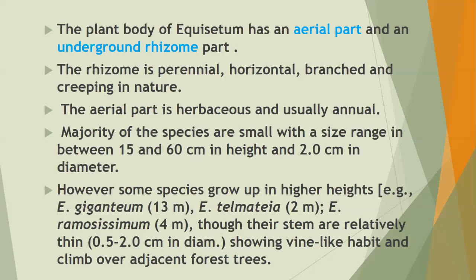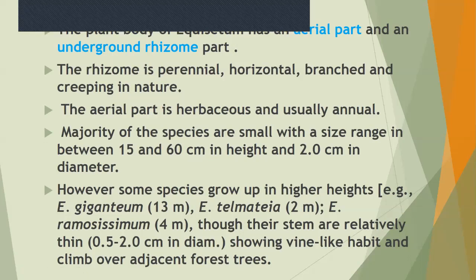Some species grow to greater heights. For example, Equisetum giganteum, Equisetum telmateya, and Equisetum ramosissimum grow up to 4 meters in height. Though their stems are relatively thin, they also show a vine-like habit and climb over adjacent forest trees.